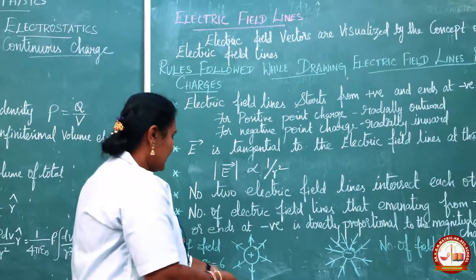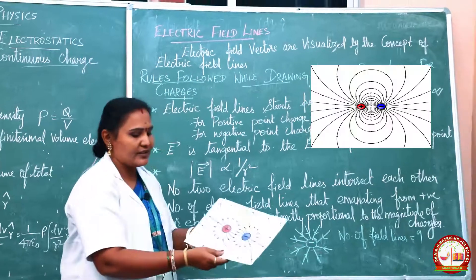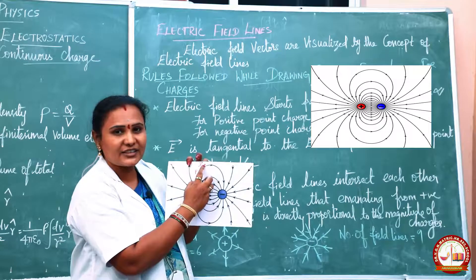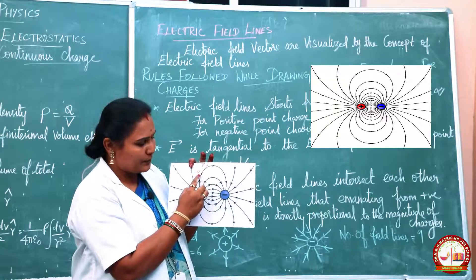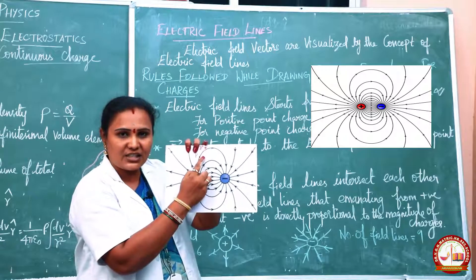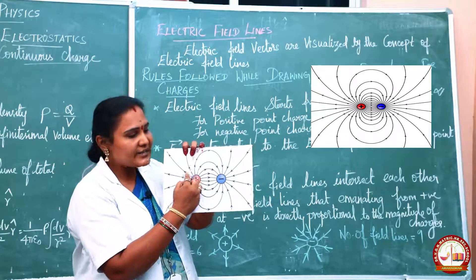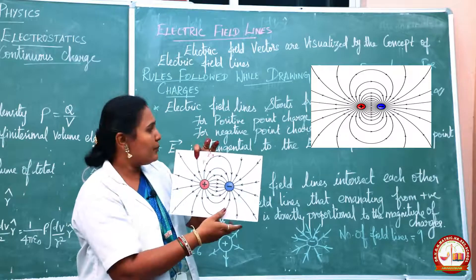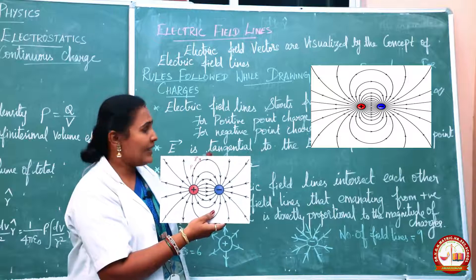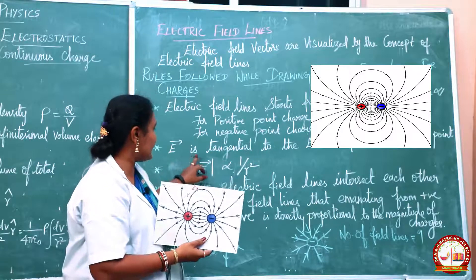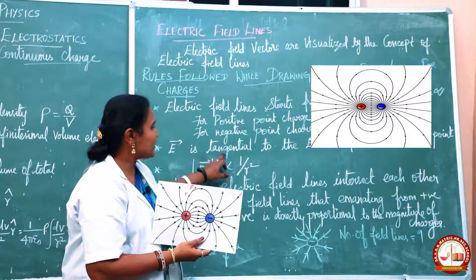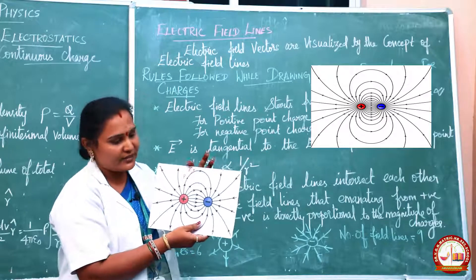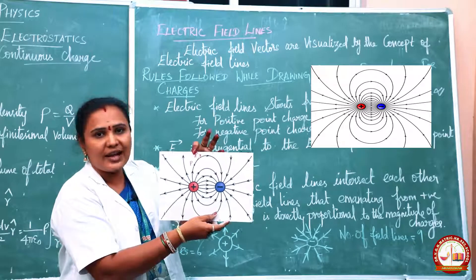The second rule: the electric field vector at a point P is tangential to the electric field lines at that point. The electric field vector E is tangential to the electric field lines at that point, as shown in the diagram.